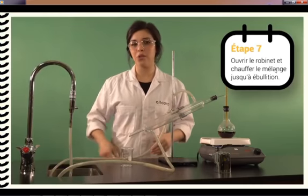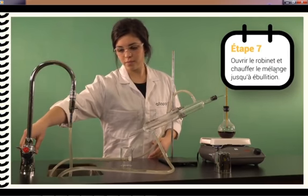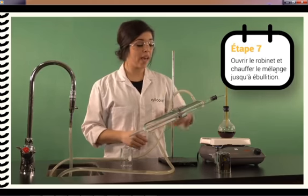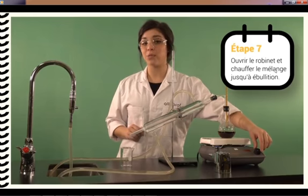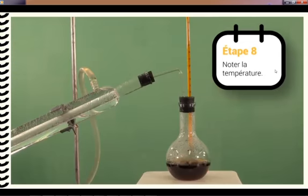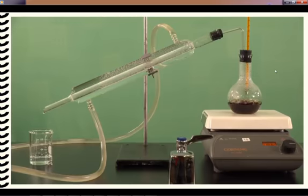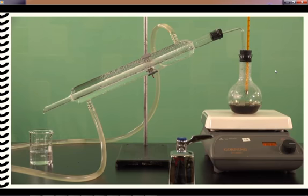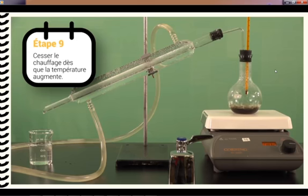Lorsque tout est en place, on ouvre l'eau froide du robinet. On met la plaque chauffante en fonction et on chauffe jusqu'à ce que le point d'ébullition d'une des substances soit atteint. Au moment où l'une des substances commence à se vaporiser, on note la température et on continue le chauffage tant que celle-ci demeure stable. La substance vaporisée entre dans le tube réfrigérant, l'eau froide la refroidit et la fait condenser. Le distillat s'écoule dans le bécher. Dès que la température augmente, on cesse immédiatement le chauffage.